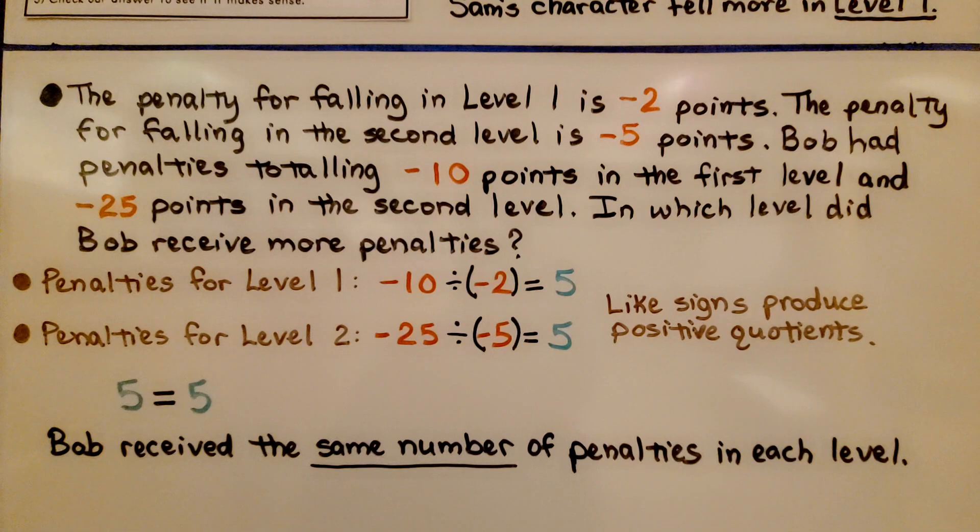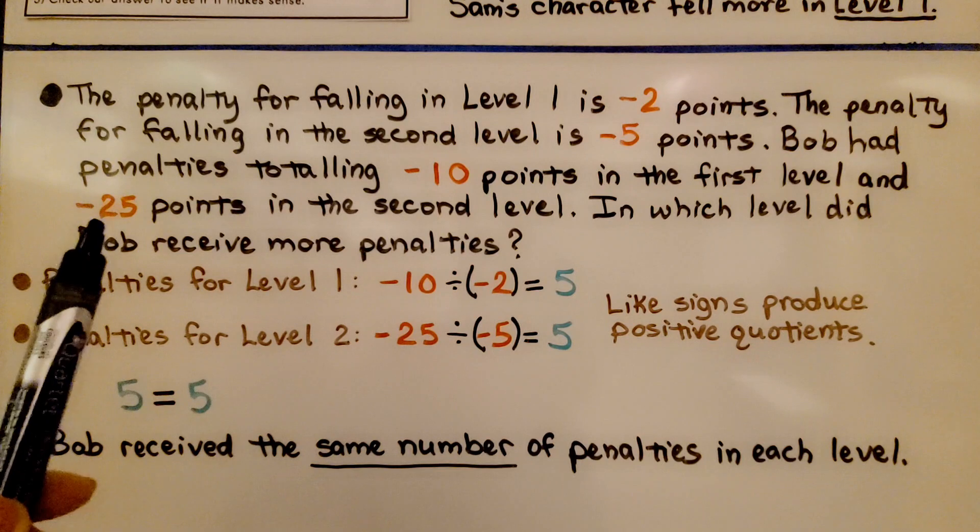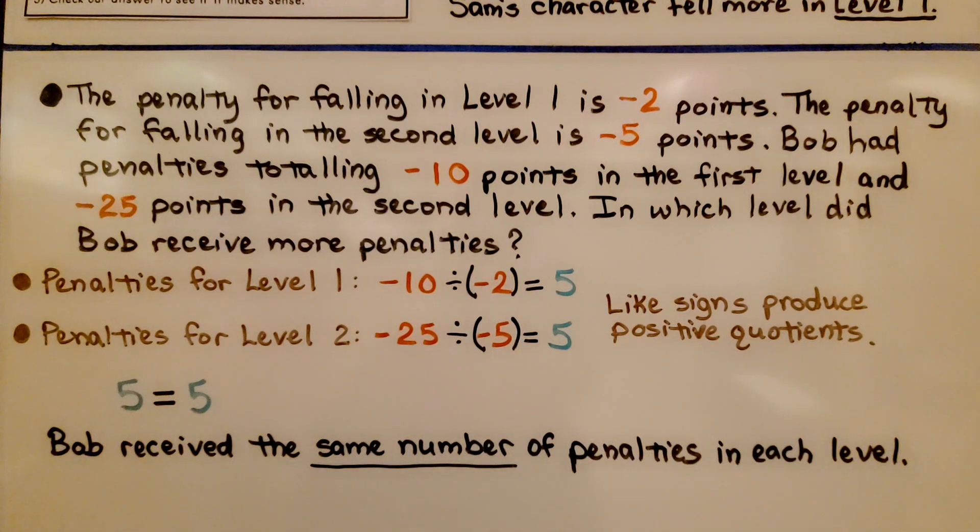The penalty for falling in level 1 is negative 2 points. The penalty for falling in the second level is negative 5 points. Bob had penalties totaling negative 10 points in the first level and negative 25 points in the second level. In which level did Bob receive more penalties?